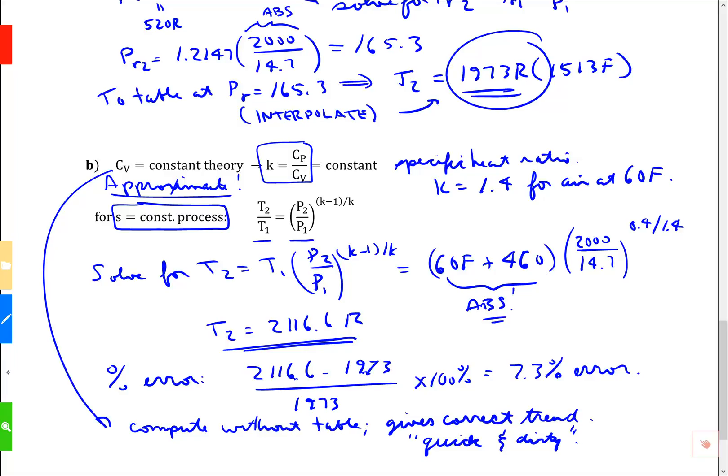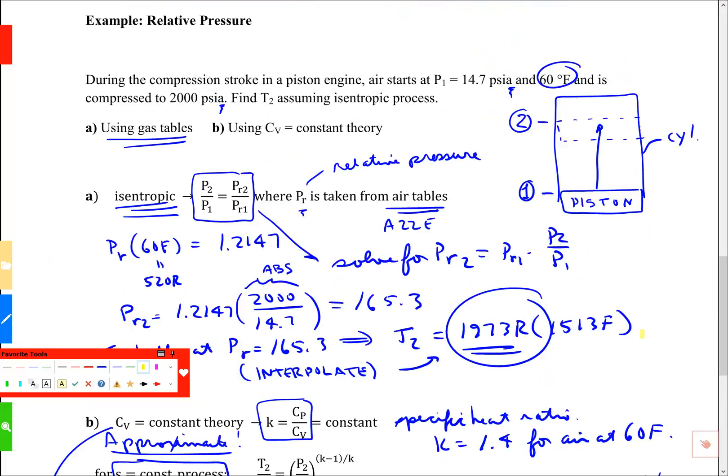Let's recap. We're doing an example of a piston in a cylinder with an extreme change in pressure and we're asked to find the change in temperature. For an isentropic process, we have special relationships. Using the air tables, the pressure ratio equals the ratio of the relative pressure, which is a temperature function that has no units. This is only useful with this equation. We interpolated to find a final answer, but we needed a table to do that.